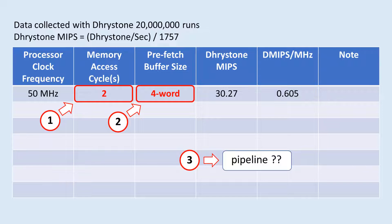Currently, I have decode and execution done in one single cycle for most instructions. For load and store, extra memory cycles are needed. Other than that, I don't have any pipeline in place right now.